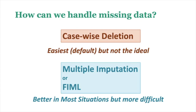With those in mind — different levels and mechanisms of missingness — how can we handle missing data? The easiest and default, but not ideal, approach is casewise deletion: if someone is missing on anything involved in the regression analysis, they're simply not included. For example, in a regression predicting health from exercise and age, if they're missing on any of those variables they won't be included in the model. This can bias your results, especially when someone still has some information but is missing on one thing. Alternatives are multiple imputation and FIML, which are very similar to each other, actually better in most situations, but tend to be more difficult to implement.